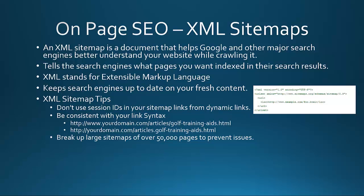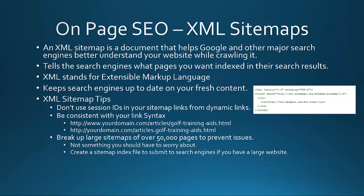Be consistent — are you using .html at the end? Are you using www or just yourdomain.com? For example: yourdomain.com/articles/golf-training-aids vs. the same URL without www. Just pick one format and go with it. If you're creating an XML sitemap, make sure all your links either start with www or they don't — just be consistent. Break up large sitemaps of over 50,000 pages to prevent issues. Most people don't need to worry about that.